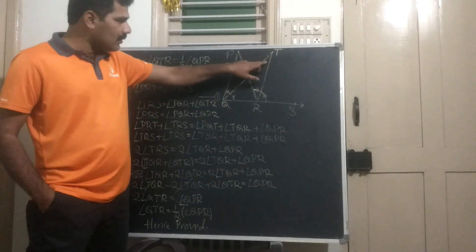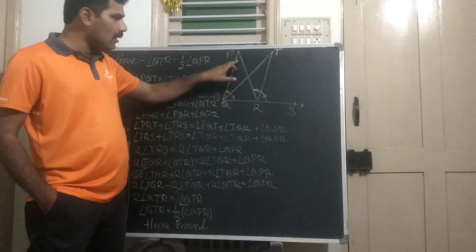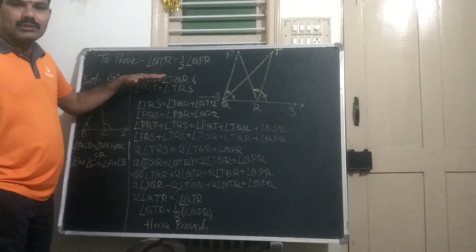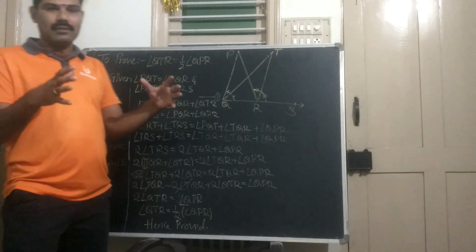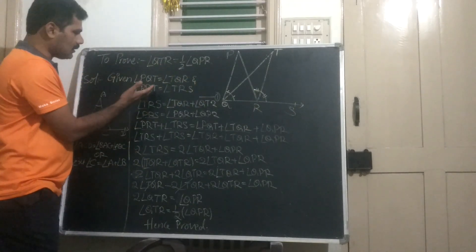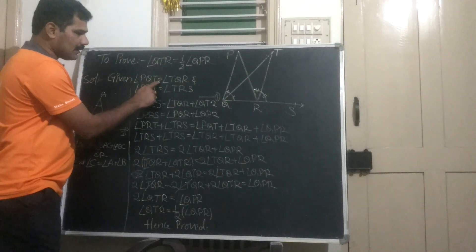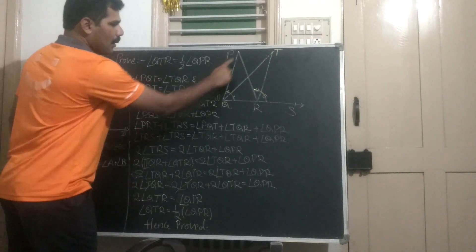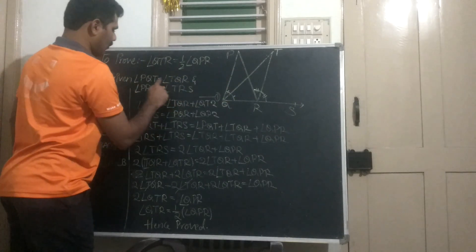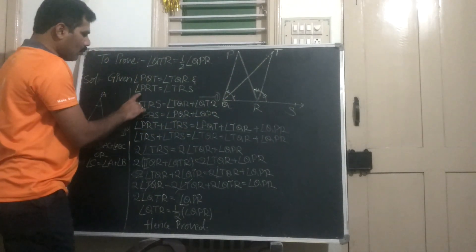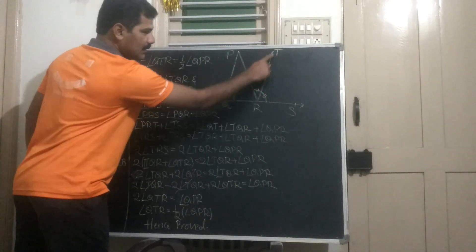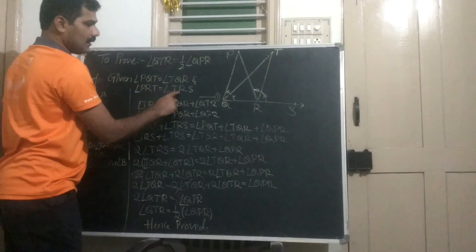So we need to prove that angle QTR is equal to half of angle QPR. First, we write the given data: angle PQT is equal to angle TQR, and angle PRT is equal to angle TRS.